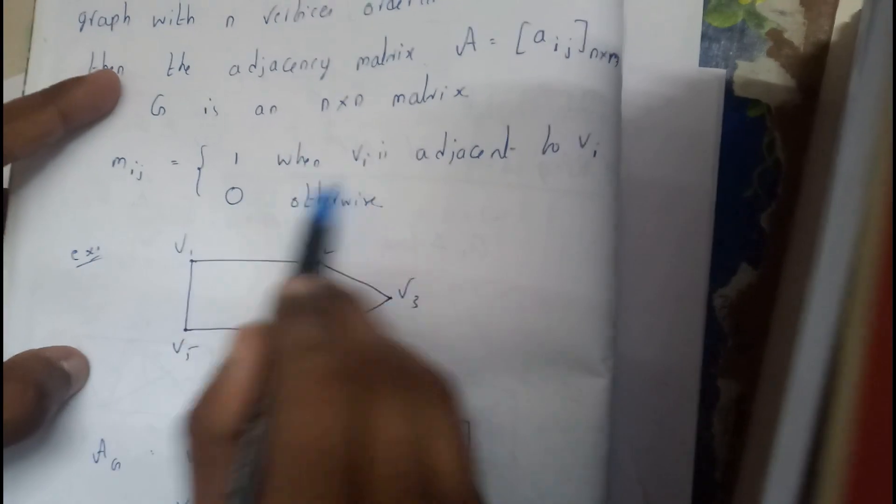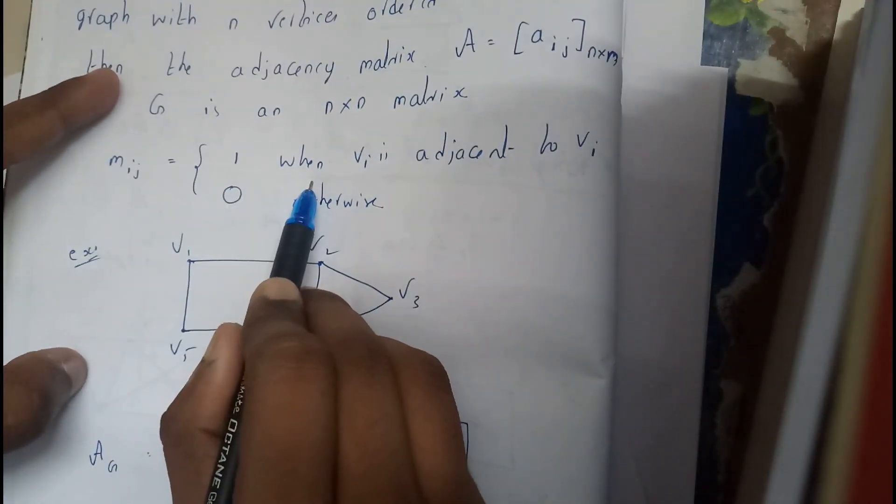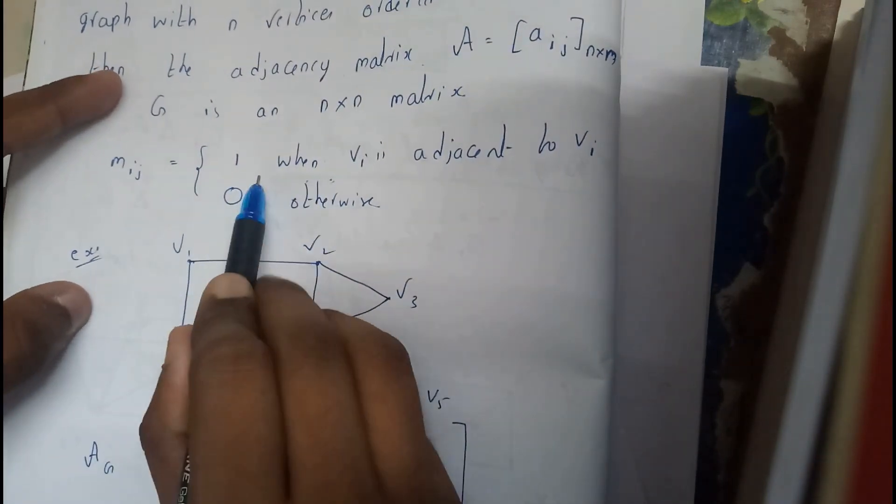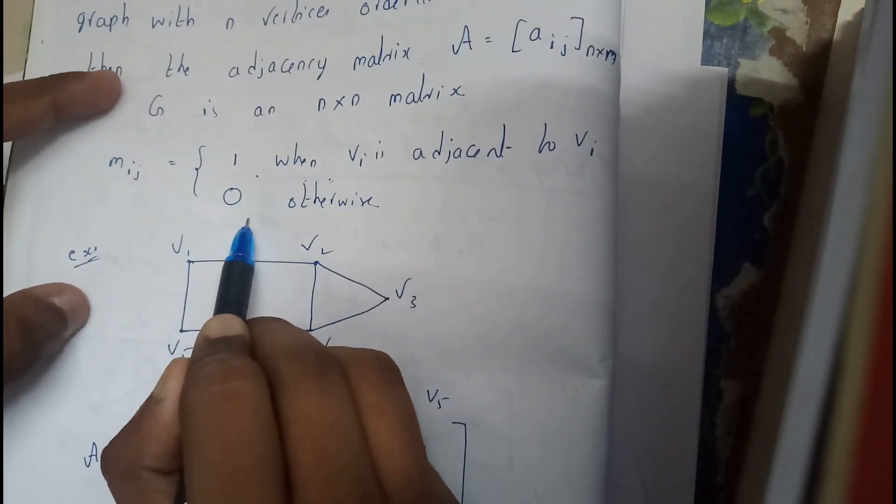So if there is an edge between those two vertices, if there is v1 to v5, then v1 to v5 if there is an edge, then we will be writing it with 1 and if there is no edge, we will be writing it with 0. That's it.